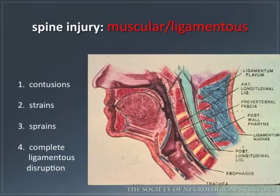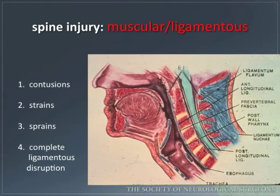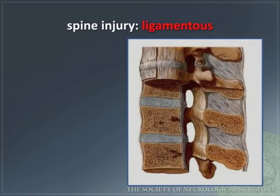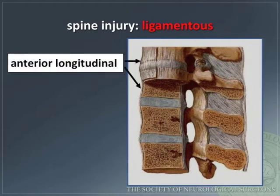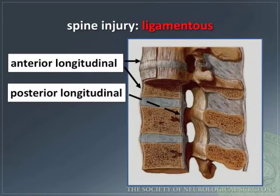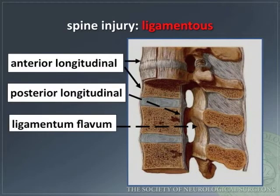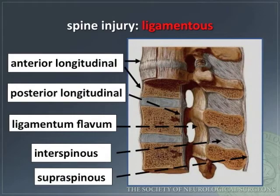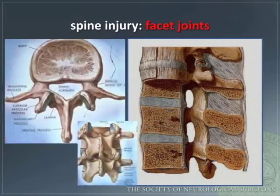Here is a diagram showing the soft tissue layers that may be injured in muscular ligamentous spine injuries. The key spine ligaments, from ventral to dorsal, are: anterior longitudinal, posterior longitudinal, ligamentum flavum, interspinous, and supraspinous. The facet joints may also be injured.